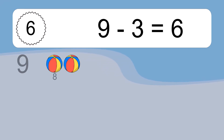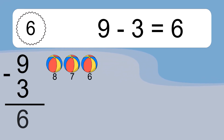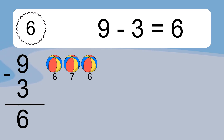9 minus 3 equals what? 9 minus 3 equals 6. Let's count it: 8, 7, 6.